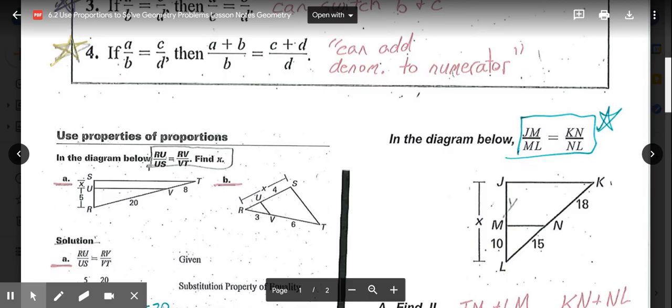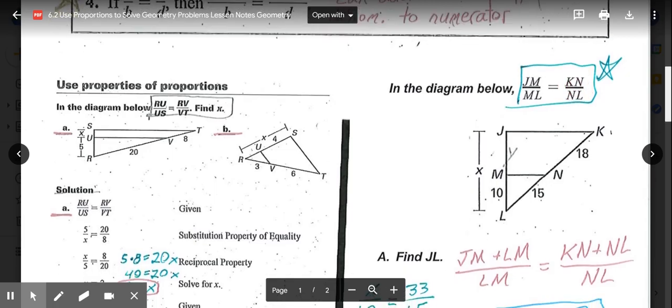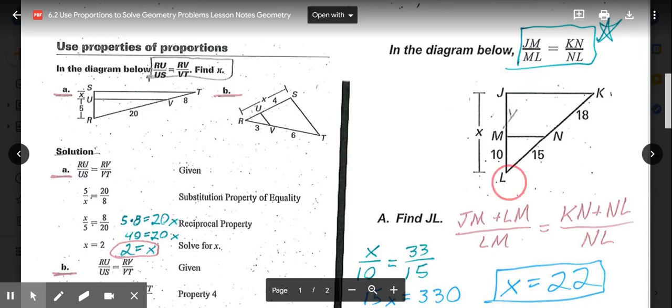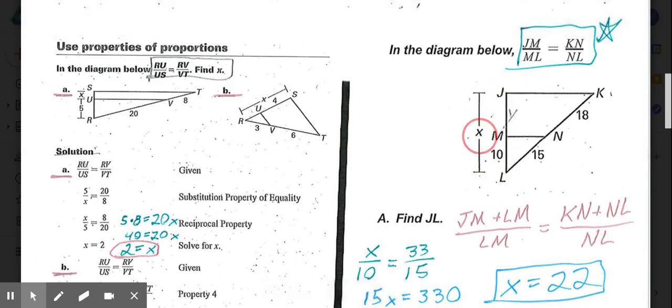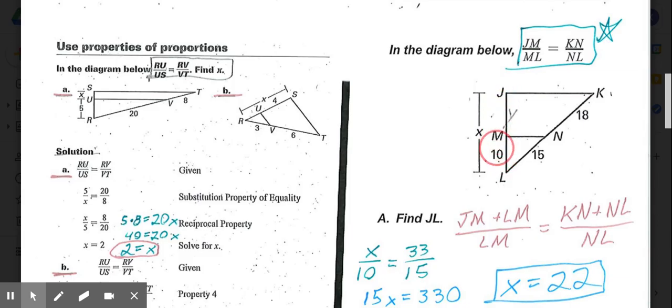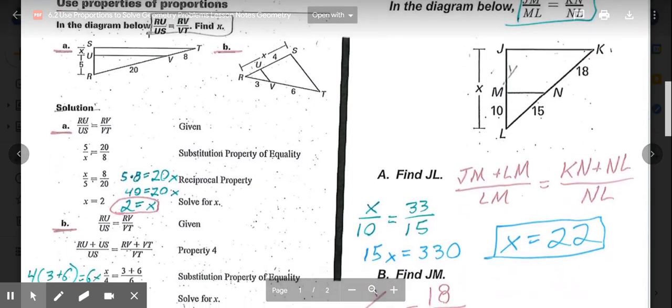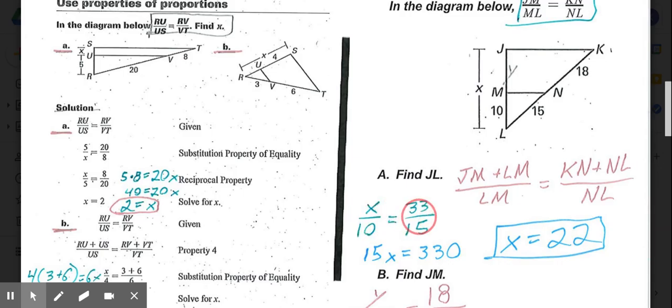Let's look at this diagram over here for two additional examples. In this diagram, we know JM/ML = KN/NL. So that's our given proportion. First thing they want us to do is find JL. So JL is this whole segment, which is X. We can have our initial setup. Because we need that whole segment, we would need to look at the JM/ML to start. And to get this whole segment, we would be adding LM to JM. So (JM + LM)/LM = (KN + NL)/NL, using property 4 again.